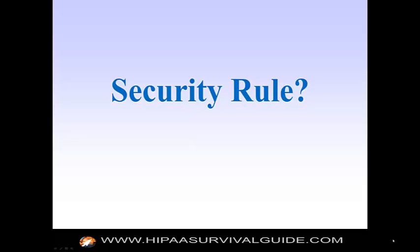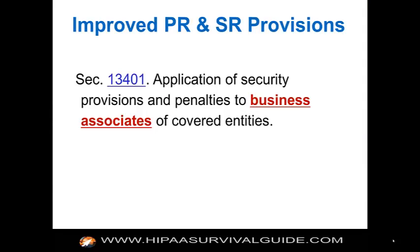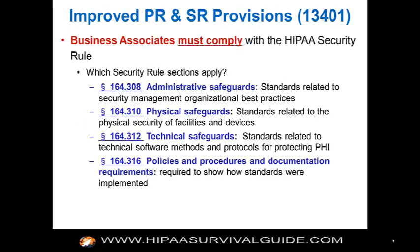We're now going to discuss business associates and their intersections with the security rule, the privacy rule, and the breach notification rule. Section 13401 of the HITECH Act — application of security provisions and penalties to business associates of covered entities — really made business associates statutorily required to comply with the security rule.